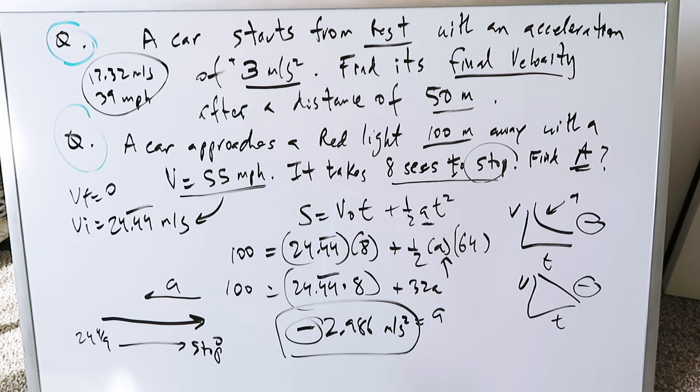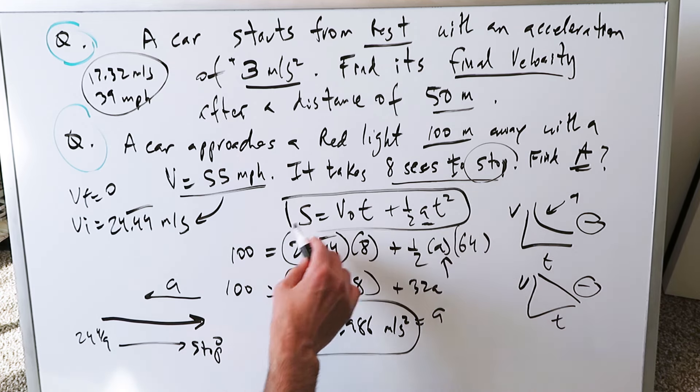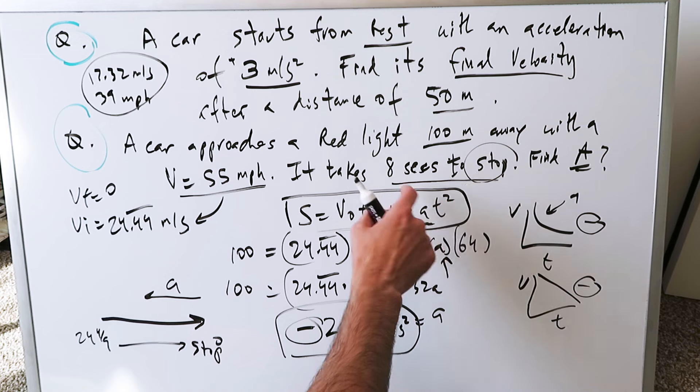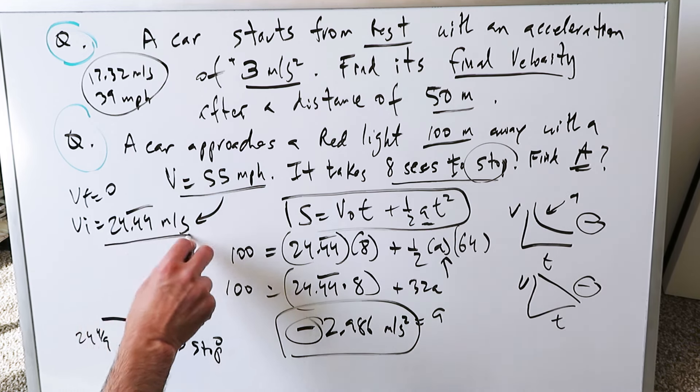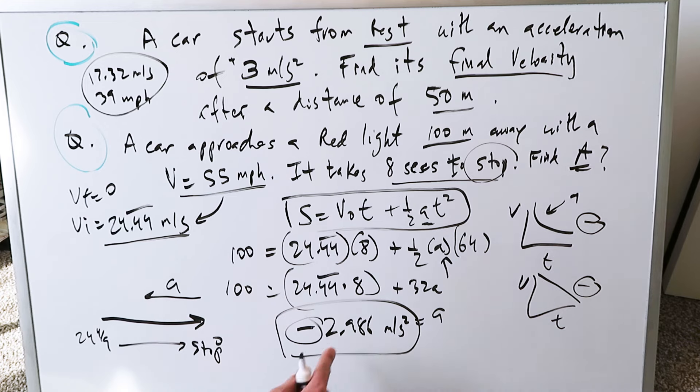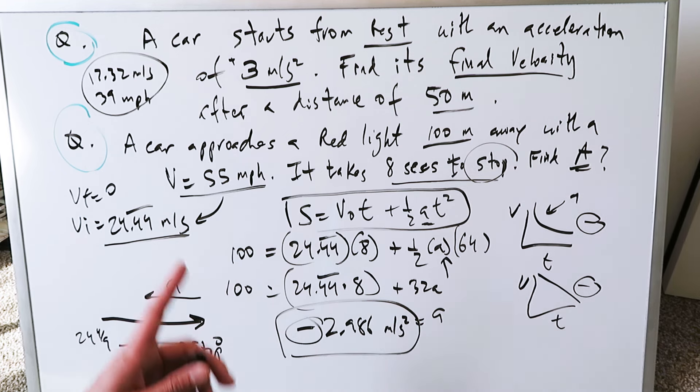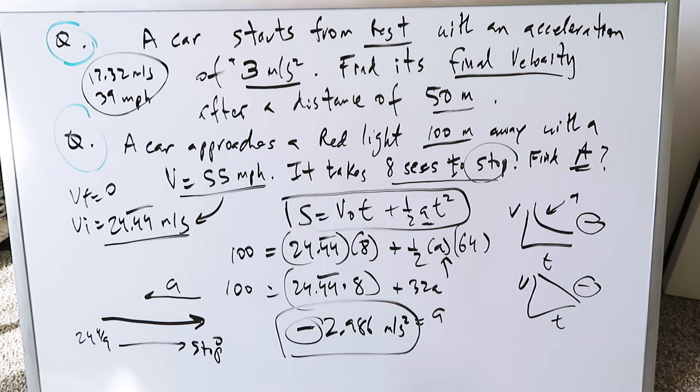Your answer, minus 2.986, is perfect. It'll be good. So here, your equation to remember is this. For an object that's 100 meters from a traffic light taking 8 seconds to stop, traveling at 55 miles per hour or 24.44 meters per second, it needs an acceleration of minus 2.986 so that it can come to a complete stop and your video comes to an end. Thank you for watching.